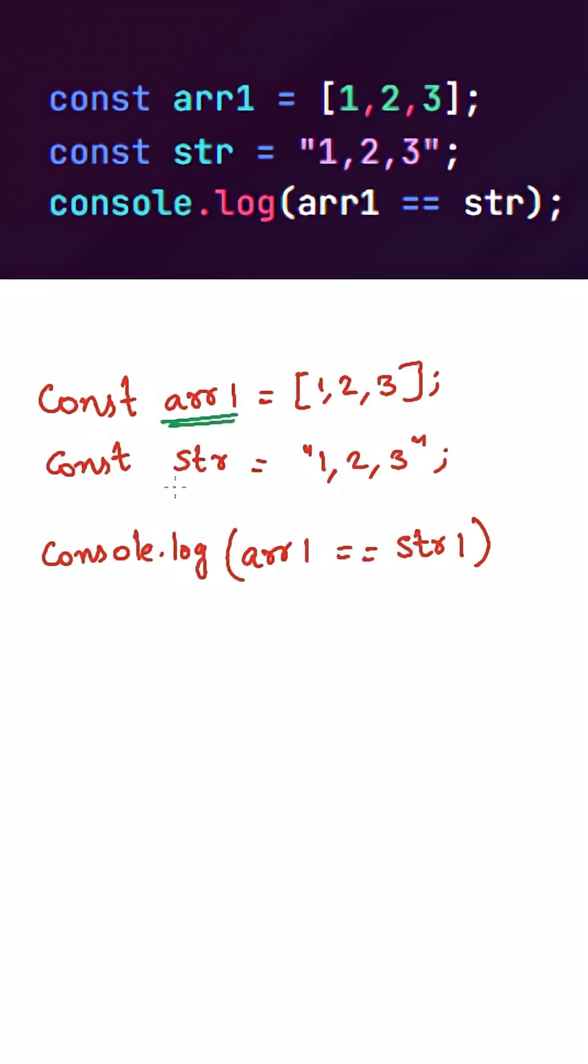Here we are creating an array. In the second line, we are creating a string 1, 2, 3. In the third line, we are using a loose equality operator between this array and a string.